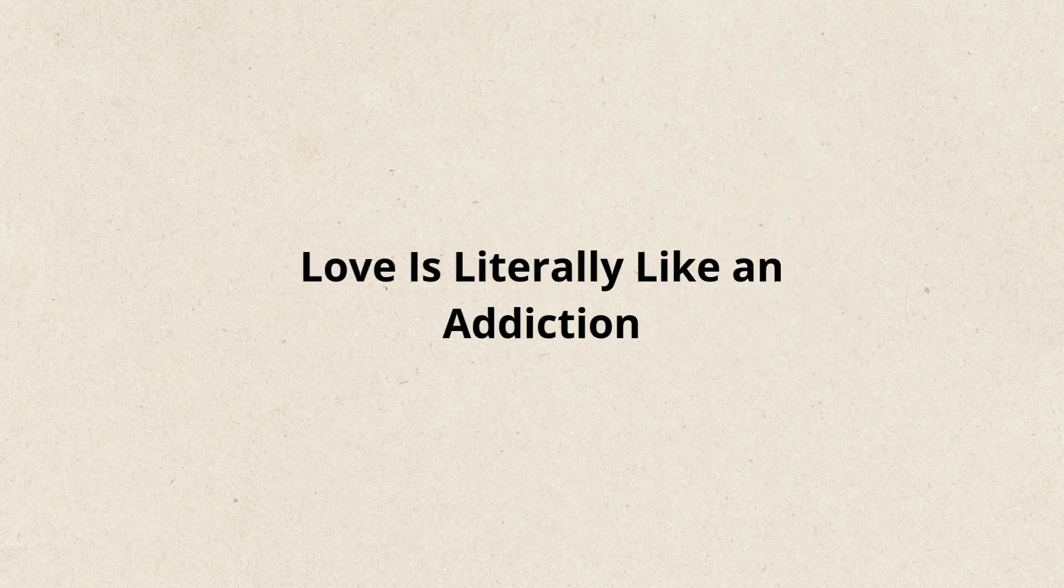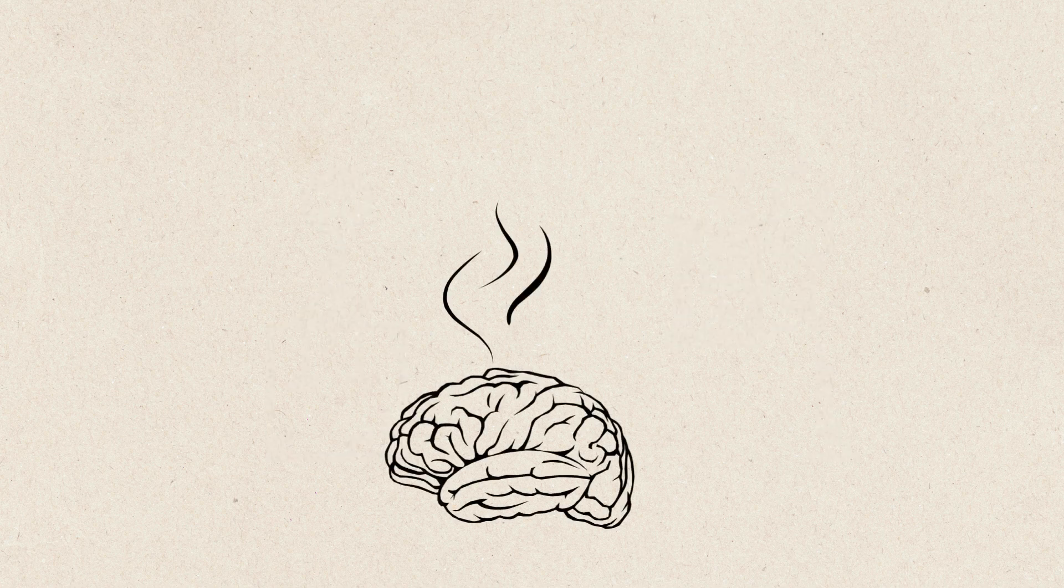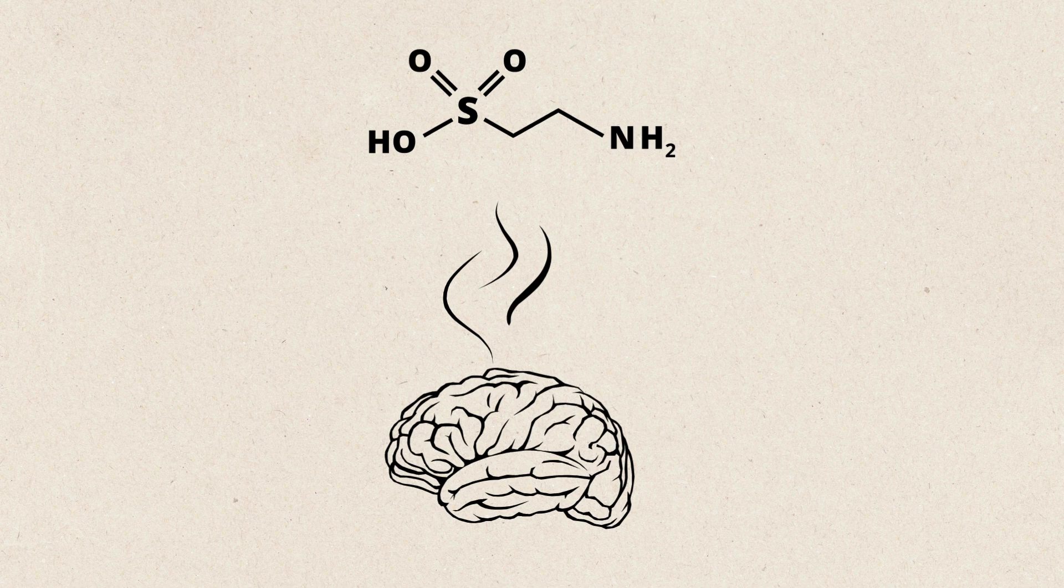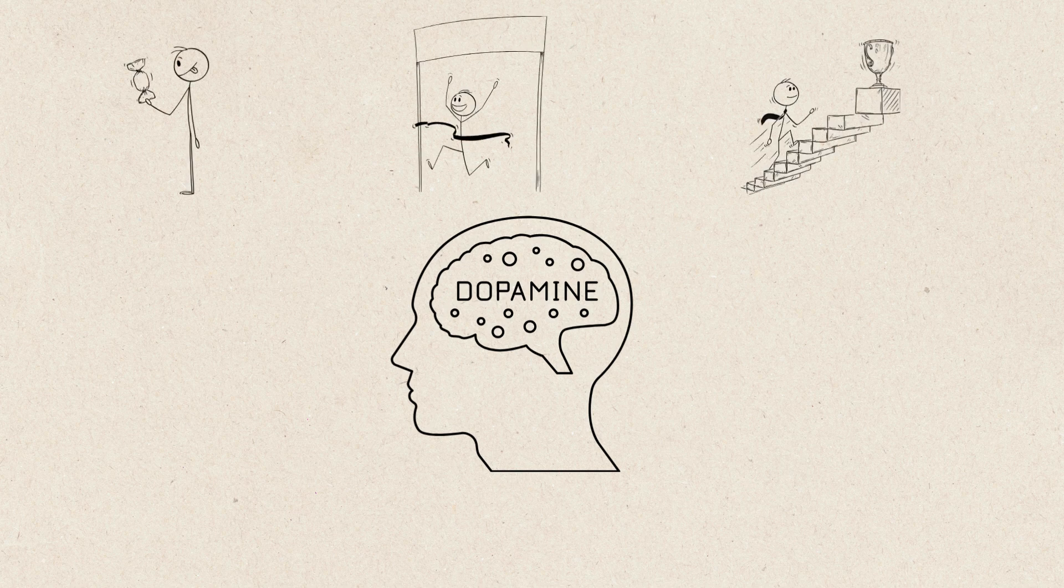Love is literally like an addiction. Let's talk about what happens when you're really into someone. When you're crushing hard, your brain releases a powerful cocktail of chemicals. Dopamine. This is the pleasure chemical that makes love feel euphoric and addictive. It's the same one released when you eat chocolate, win a game, or achieve a goal. That's why you can't stop thinking about your crush. It's a literal high.